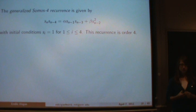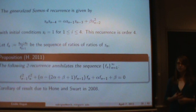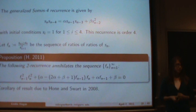Instead of looking at the ratios, I'm going to look at the ratios of the ratios. So we look at the sequence F_n, which is S_{n+2} over S_{n+1} divided by S_{n+1} over S_n. I claim that this 2-recurrence annihilates this sequence of ratios of ratios of the SOMOS 4 sequence. I originally proved this directly, but later found a paper by Honin and Swart in 2008 that implies this result.